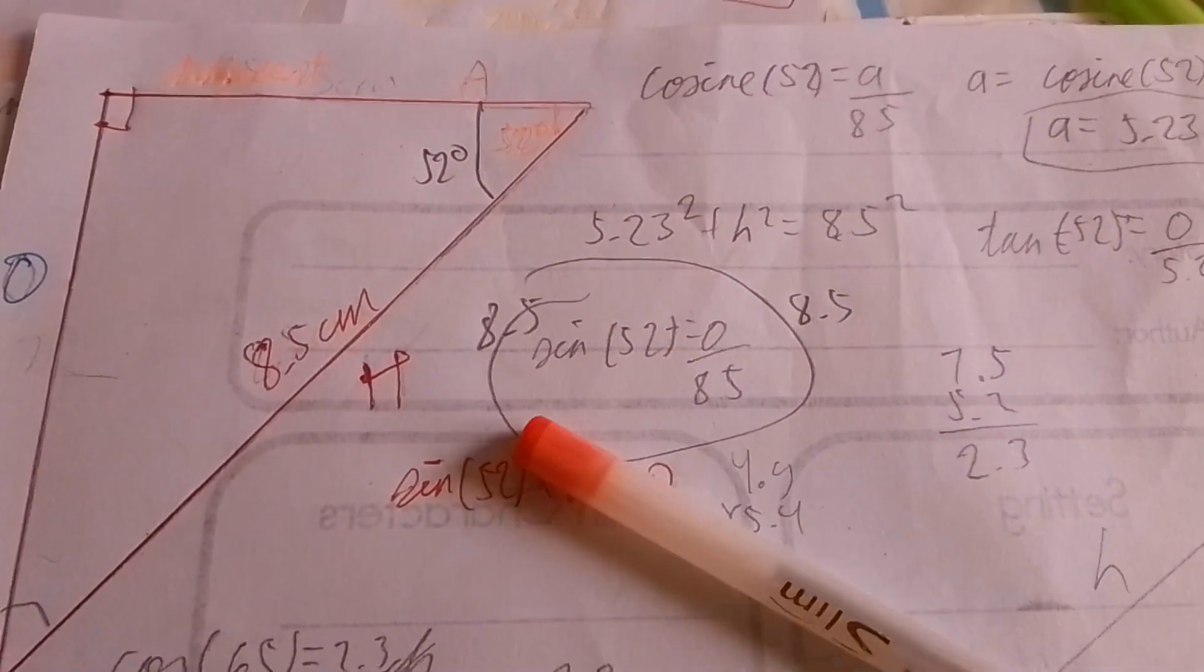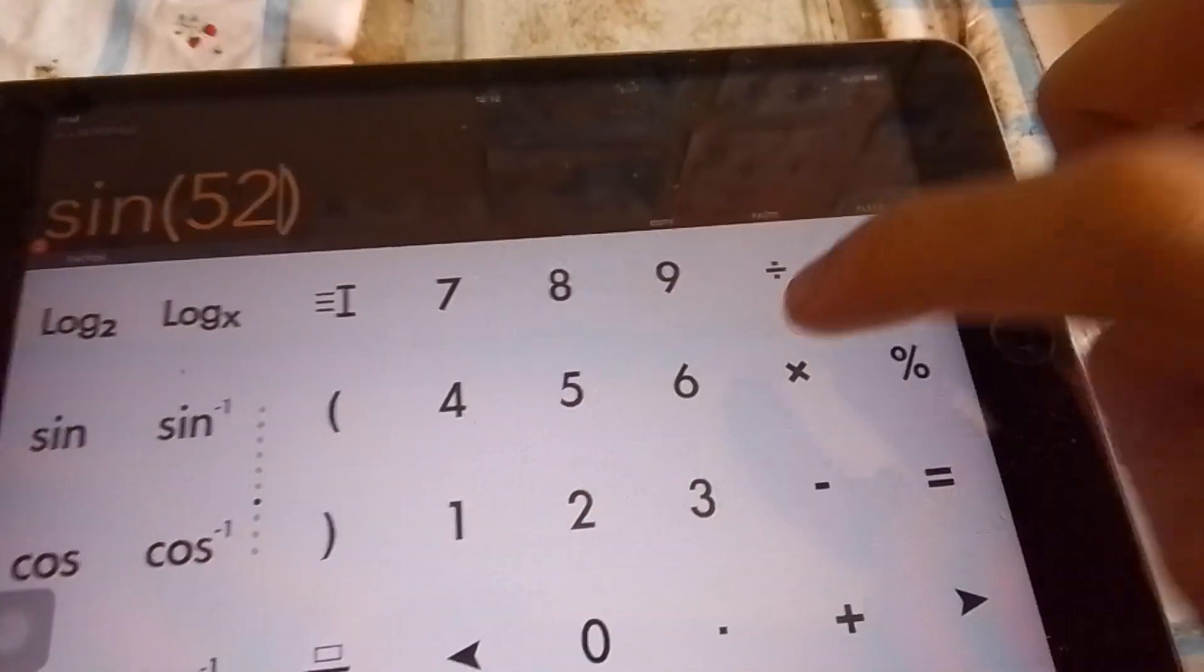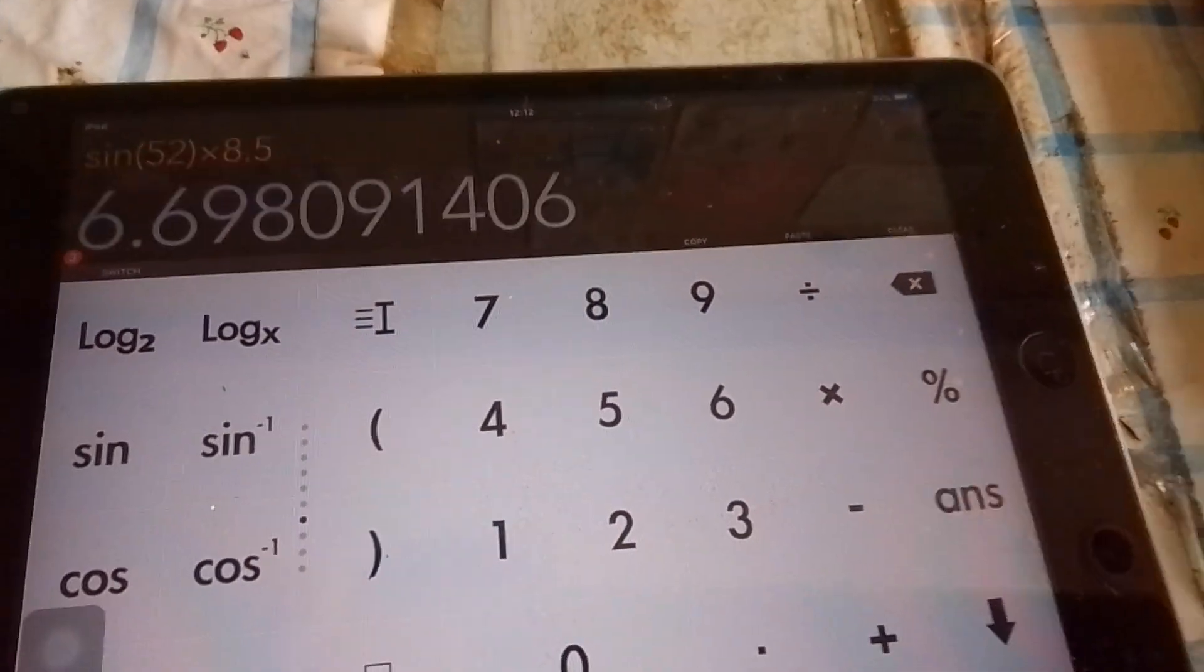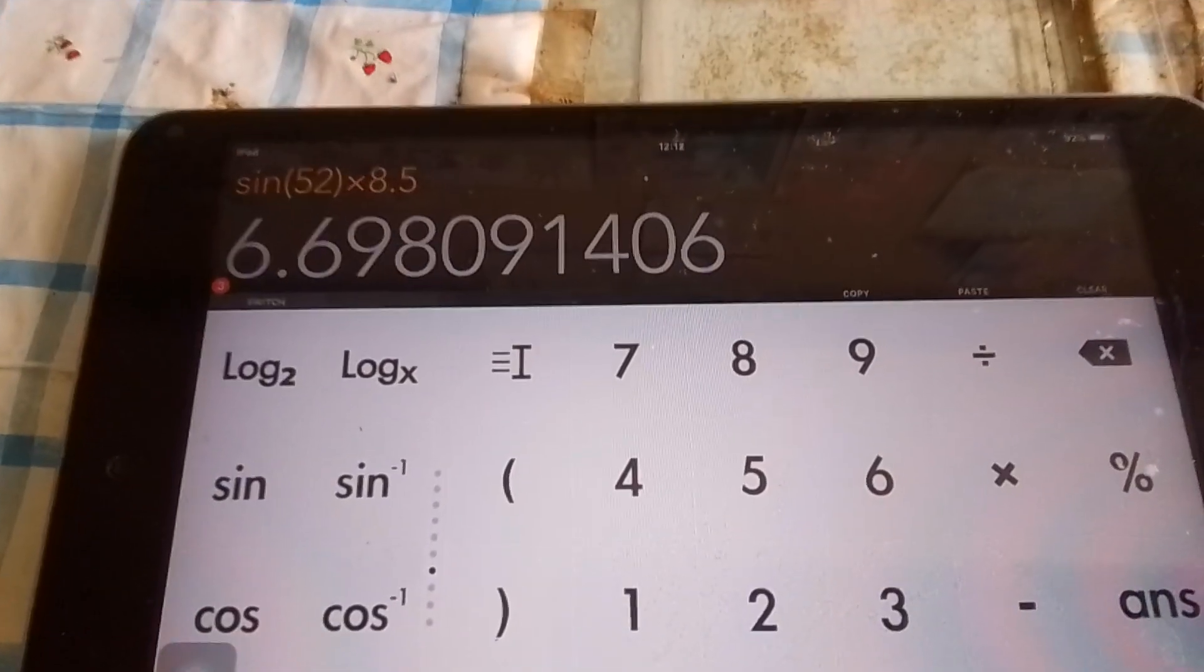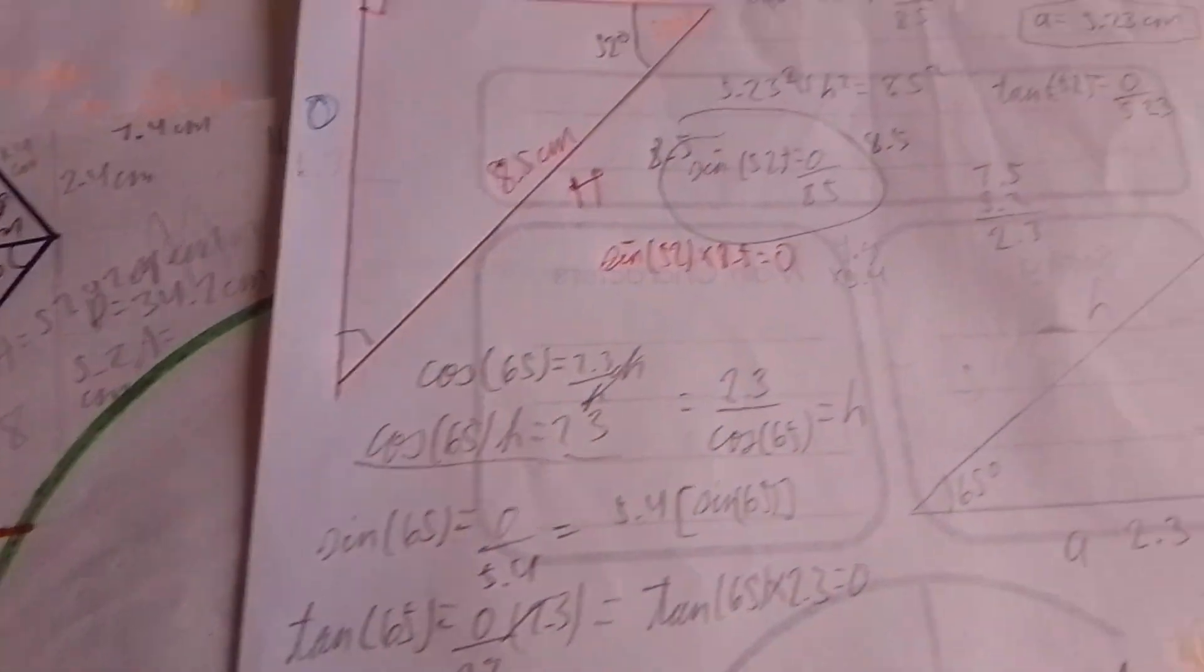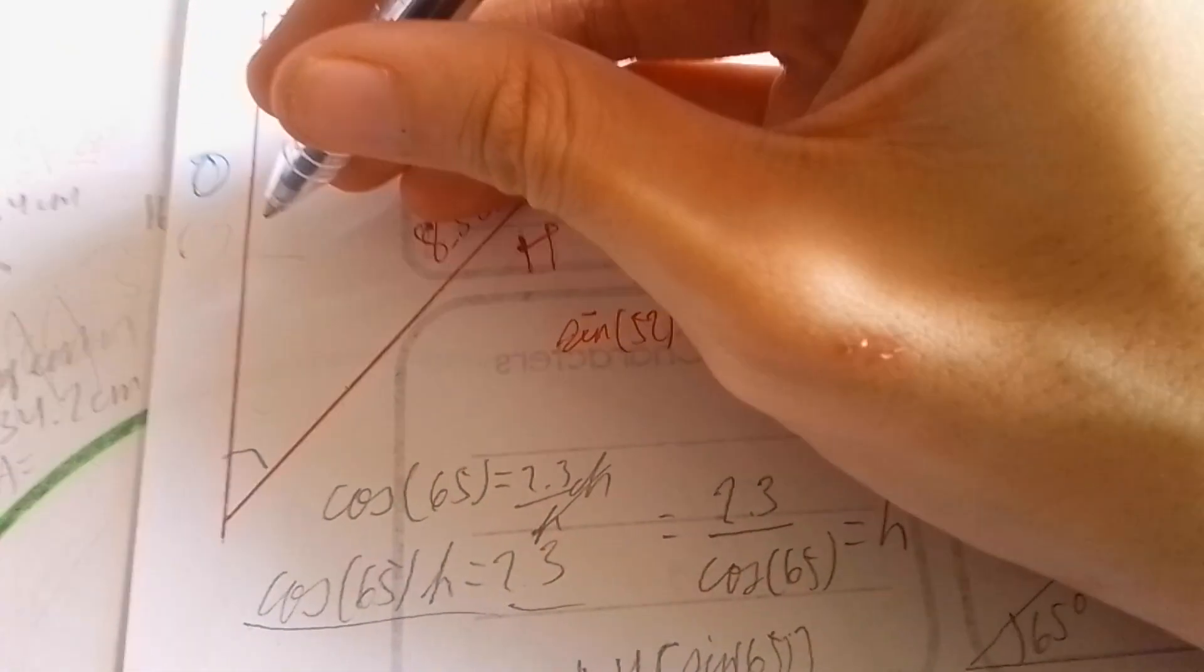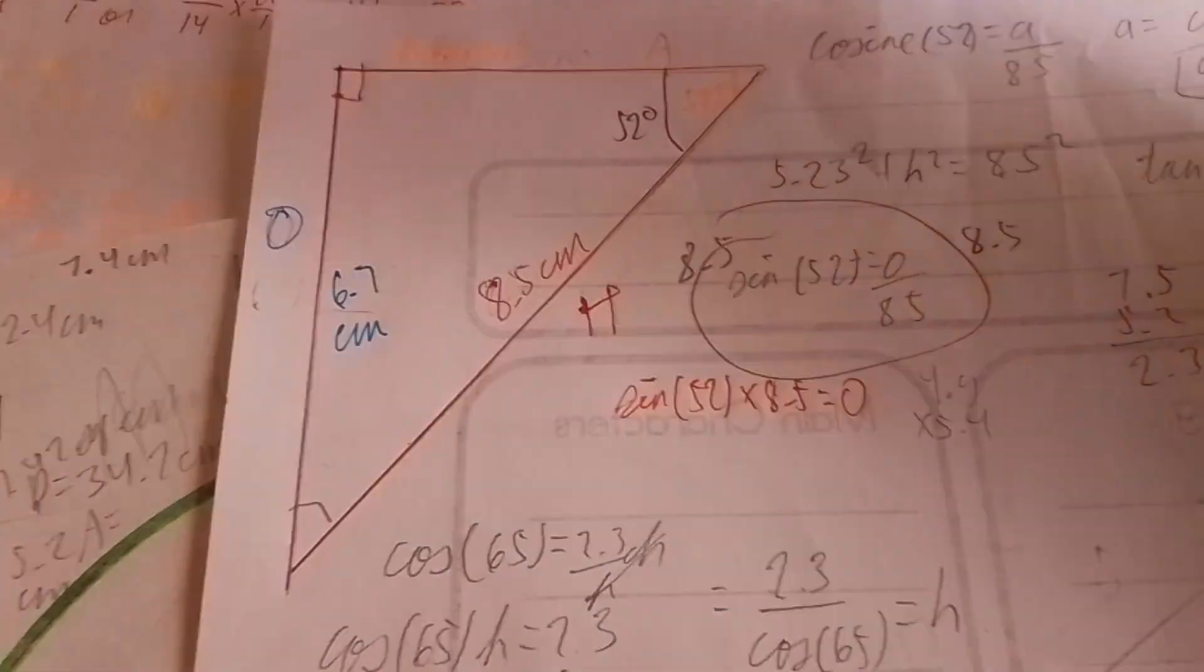So your formula will look like this: sine of 52 times 8.5 equals O. Just plug that into your calculator for the answer. So now we have our calculator. Sine of 52 times 8.5, what's the answer? 6.69 or we can round to 6.7. So that is the measure of your opposite. The opposite measures 6.7 cm.